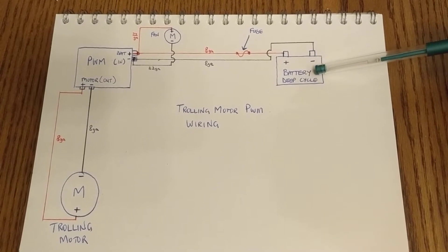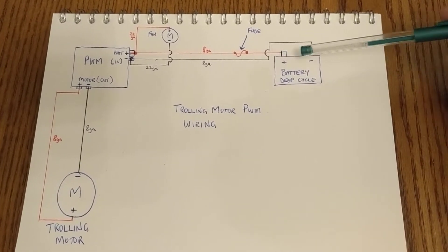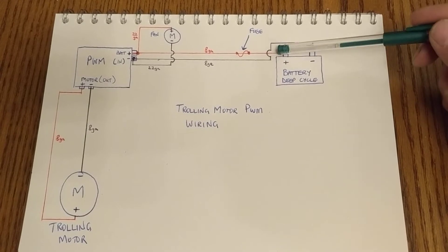We'll start over here at the battery. This is a deep cycle battery that I'm using. I've color coded this stuff. Black is negative, red is positive.